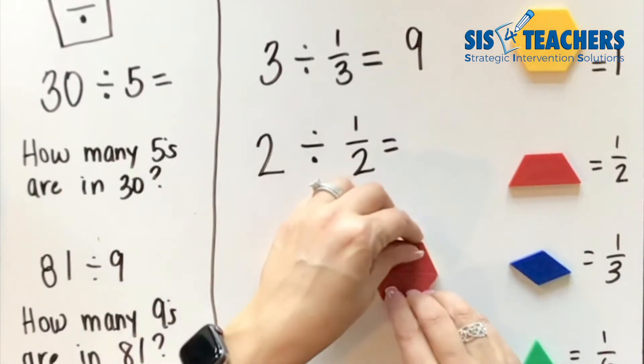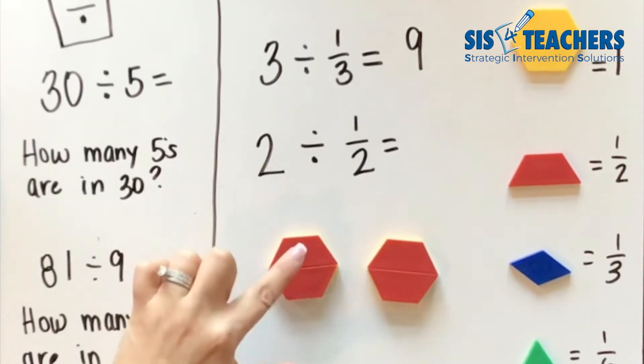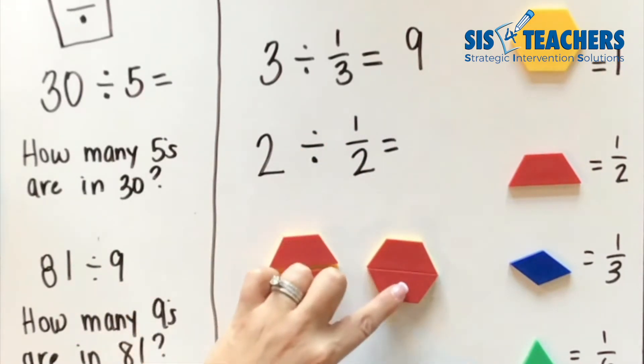Simply building that with your pattern blocks will help you to see how many go in there. So we know we don't write this as a fraction because it wants to know how many of these fit into two. So I know that there's one, two, three, four.